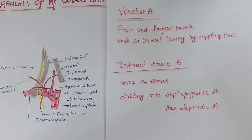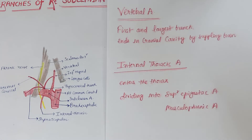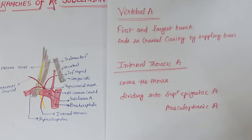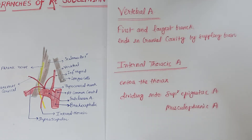Branch one: the vertebral artery is the first and largest branch of the first part of the subclavian artery. It runs a long course and ends in the cranial cavity, supplying the brain. It is divided into four parts. The first part extends from its origin to the foramen transversarium of the sixth cervical vertebra, running upward and backward into the angle between the scalenus anterior and longus colli muscles, behind the common carotid artery, the vertebral vein, and the inferior thyroid artery.